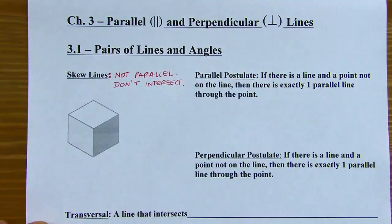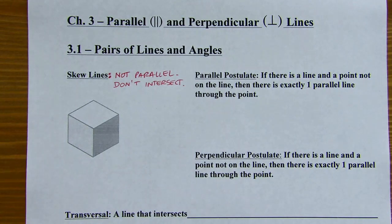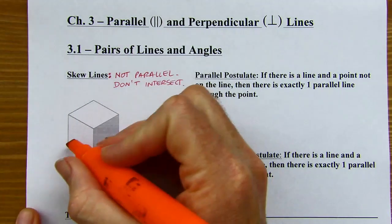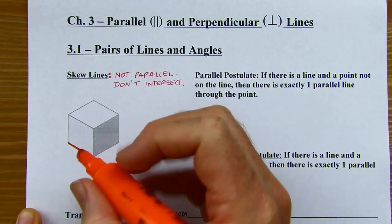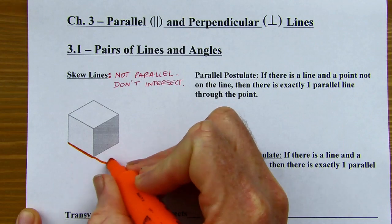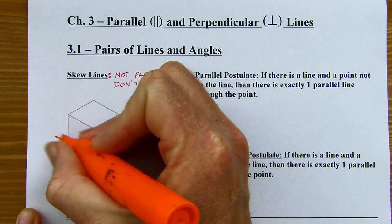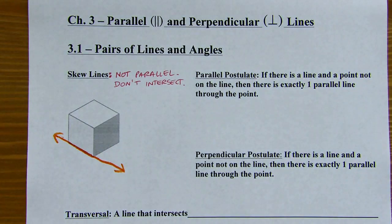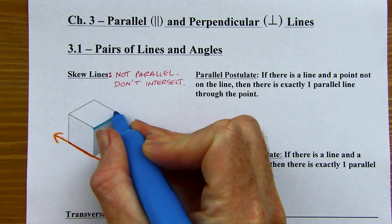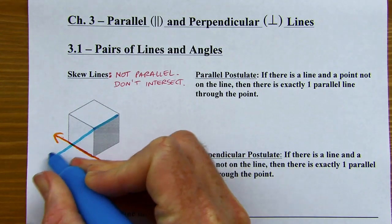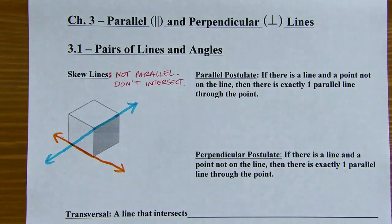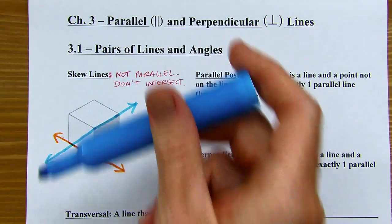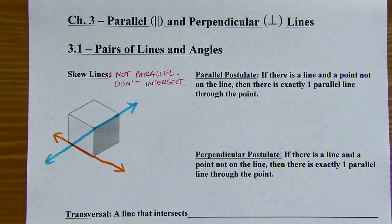Skew lines are not parallel, but also they don't intersect. The easiest way to illustrate that is with a three-dimensional object like this cube. If you take the bottom edge of this cube and extend that into a line, and then take this top edge up here and extend it into a line, hopefully you can visualize how the blue one would pass over the orange line. They're definitely not parallel, but they also would not intersect, because they're on different planes.